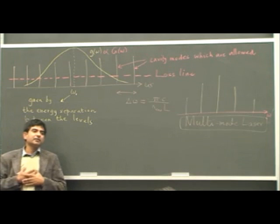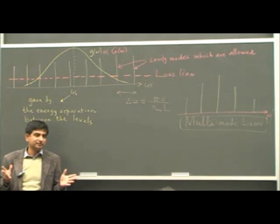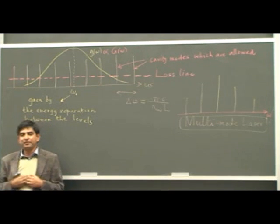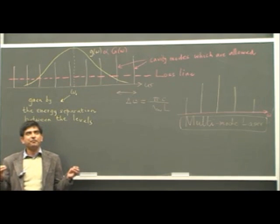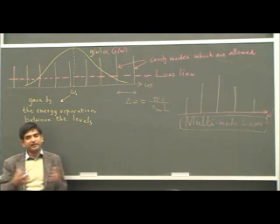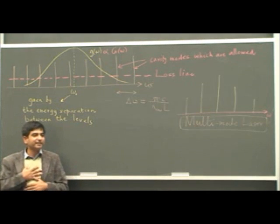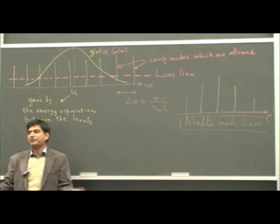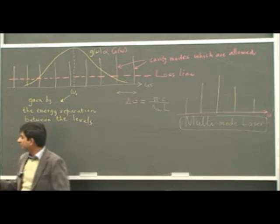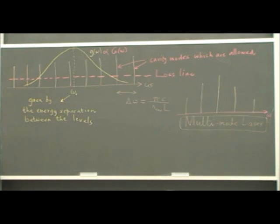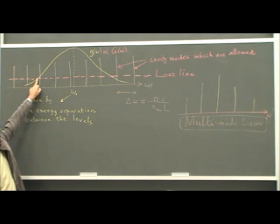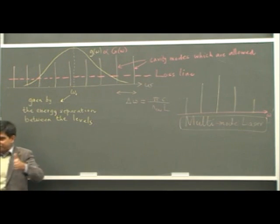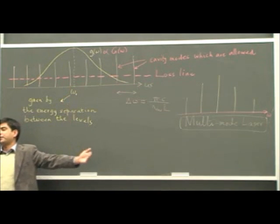Lifetime broadening is not much. Pressure broadening is not much more either. We can decrease the pressure of the gas so that collisions are less frequent, making the line sharper and decreasing the gain bandwidth. So there are two ways: either decrease the gain bandwidth and make it sharper, or increase the spacing between the cavity modes.